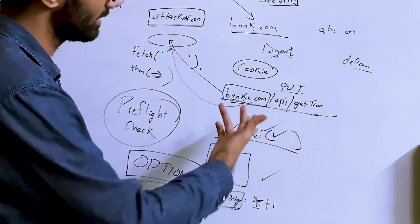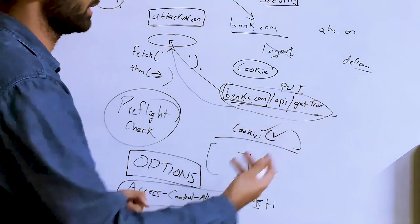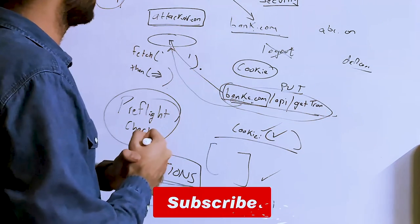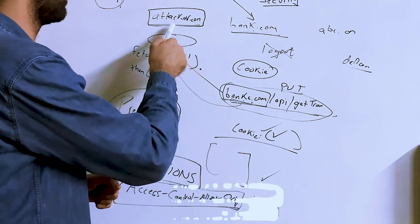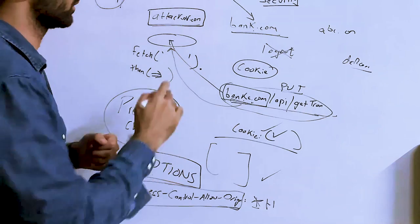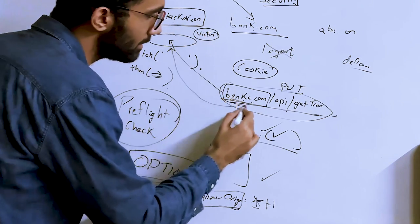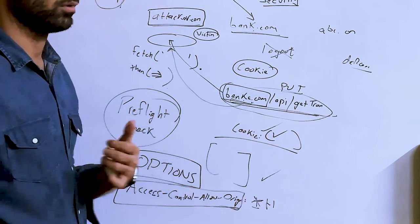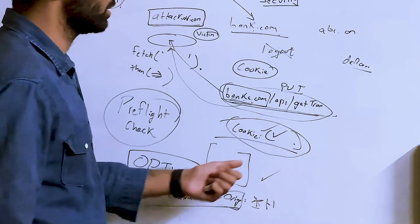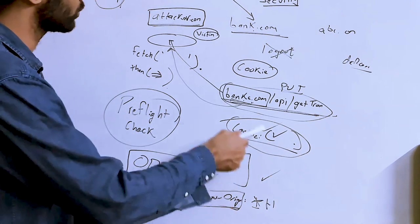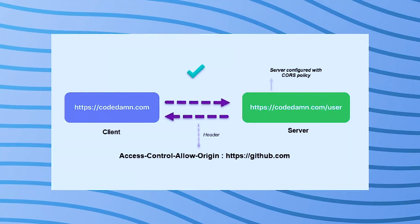You might wonder why you can't just make the same request on the server — there's no CORS on the server side. The critical piece to remember is that attacker.com is not visited by you the attacker; it's visited by the victim. Even if you could technically make this request on your own backend, you don't have the victim's cookie — that authentication information is stored inside the victim's browser.